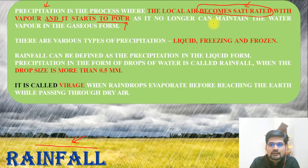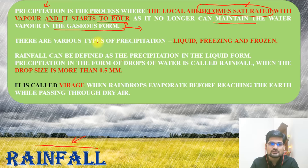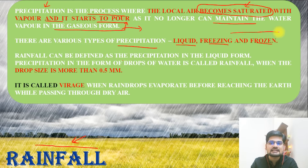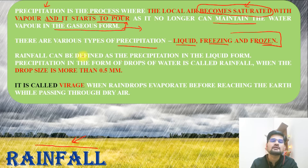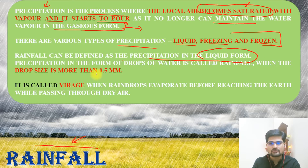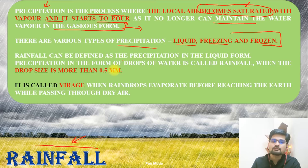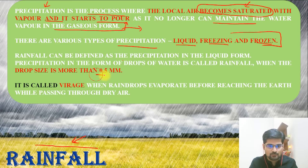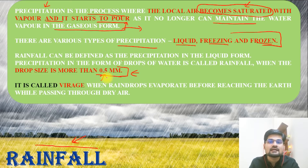When air can no longer maintain water vapor in gaseous form, condensation starts happening. There are various forms of precipitation — liquid, freezing, and frozen. Rainfall is precipitation in the form of liquid. For rainfall, the drop size is important: it must be 0.5 millimeters or more. If it is less than 0.5 mm, it is not considered rain.